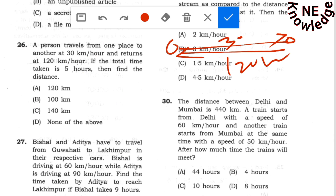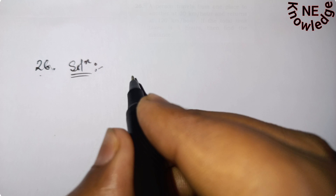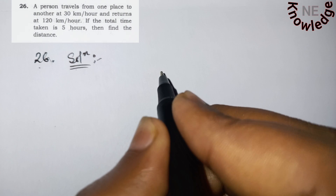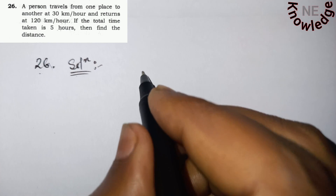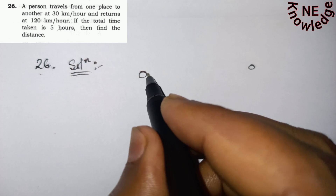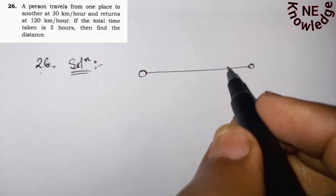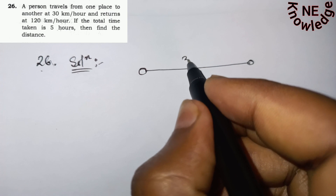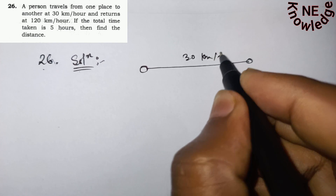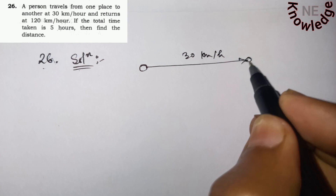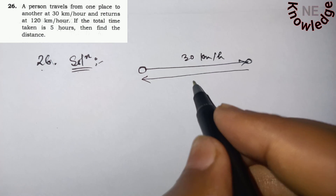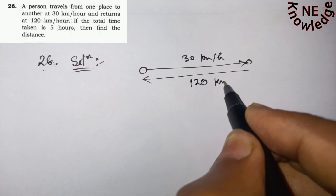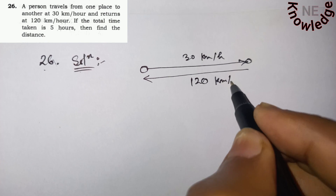Using pen and paper — if the total time taken is given, we notice the total speed for the first leg is 30 km per hour and the total speed for the return is 120 km per hour.